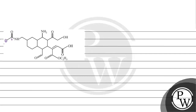Now, if we count the number of carbon atoms in the system: one, two, three, four, five, six, seven, eight, nine, ten, eleven, twelve, thirteen, fourteen, fifteen, sixteen, seventeen, eighteen, nineteen, twenty, twenty-one, twenty-two. So we have twenty-two carbon atoms in the system. Twenty-two plus one.